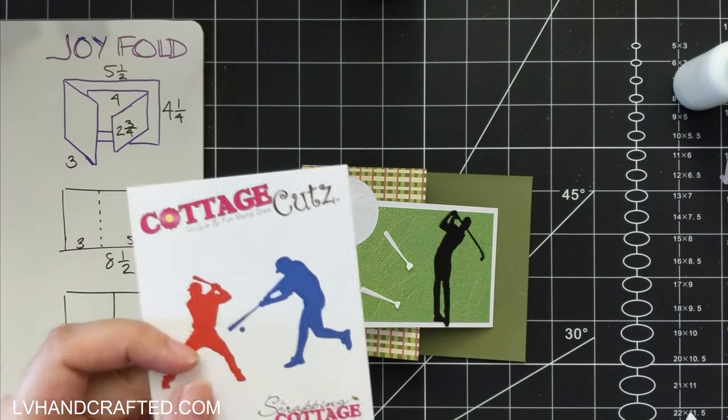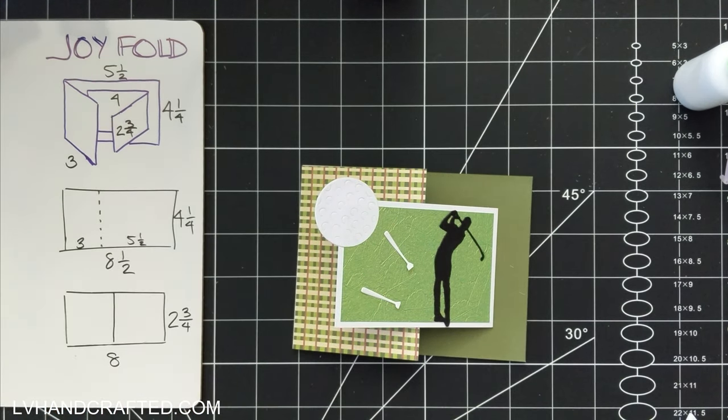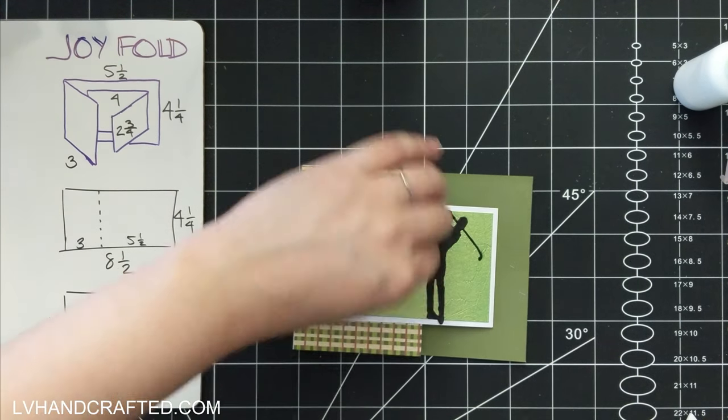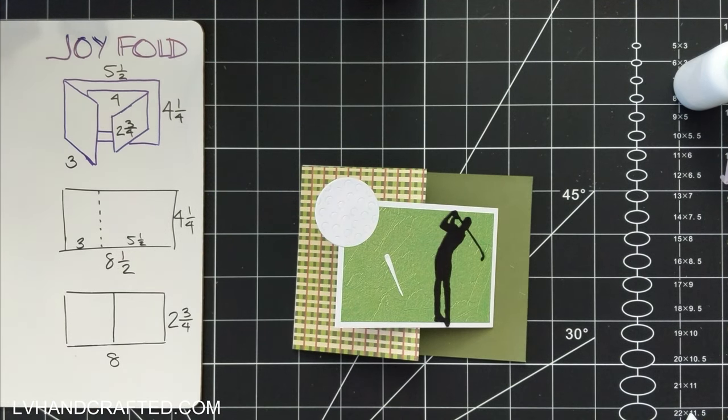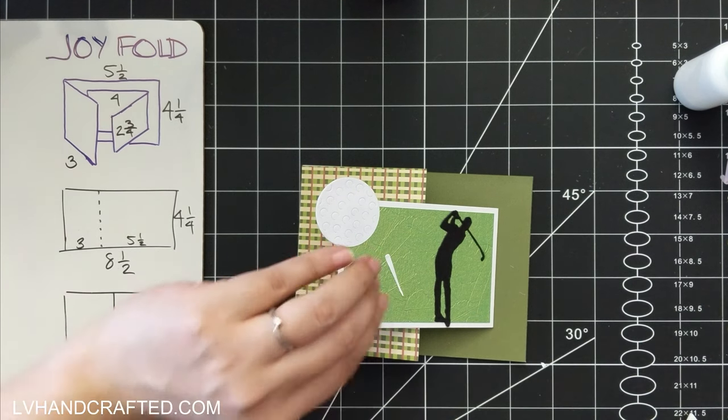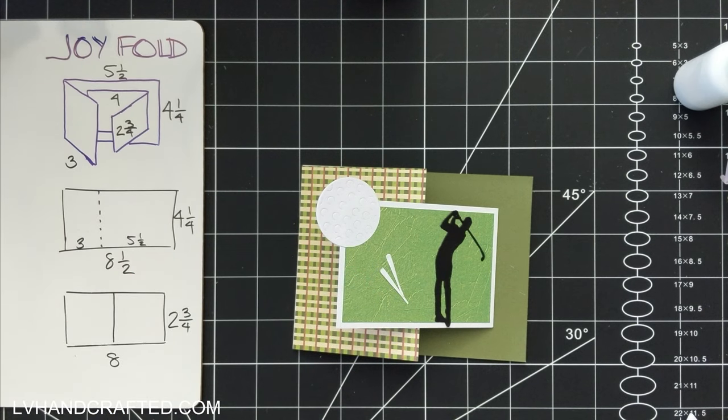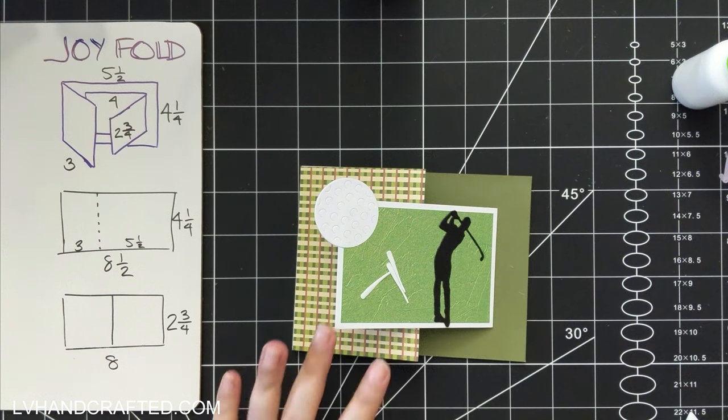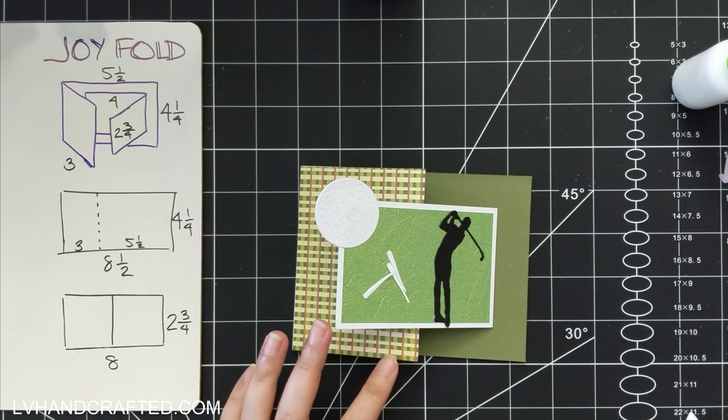What I did here was I took the baseball bat from the baseball player silhouette and I cut just the bat out of that and just tapered the ends of it a little bit just to trim that off.